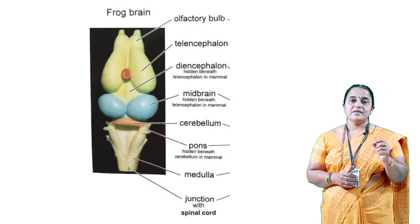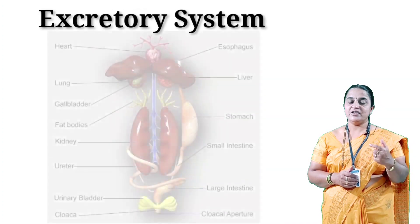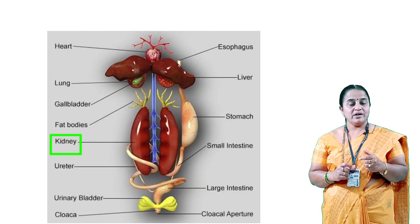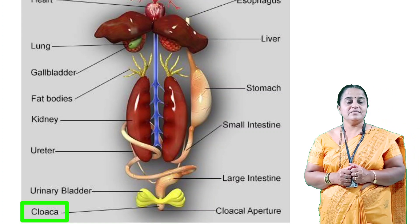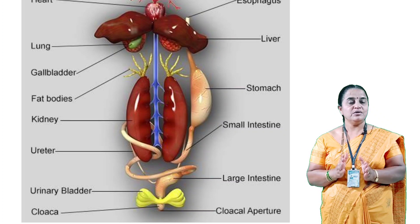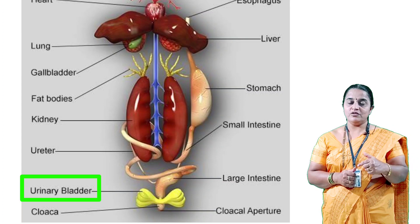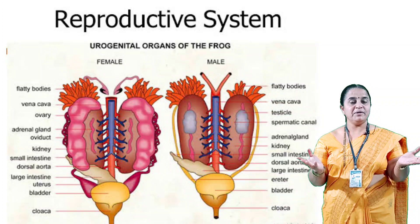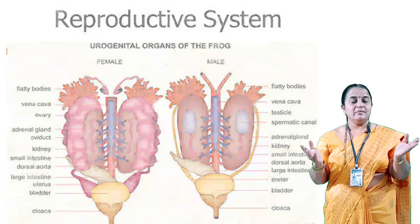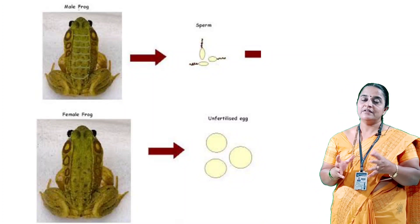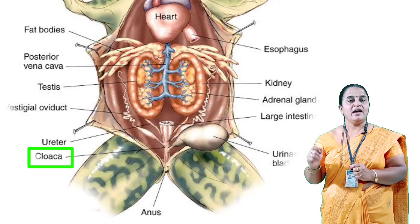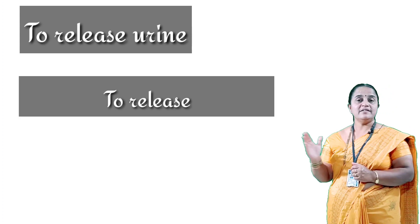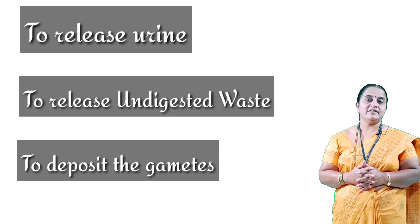The brain is well-developed. The excretory system includes paired kidneys, ureters, and urethra, which opens into a chamber called the cloaca. The cloaca receives urine from the kidneys through the bladder. Digestive waste is also released into the cloaca. The reproductive organs in both male and female are well-developed. As the frog is unisexual, male frogs release sperm and female frogs release eggs into the cloaca, making it a common chamber for nitrogenous waste, fecal matter, and gametes.